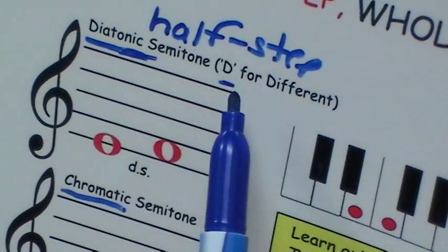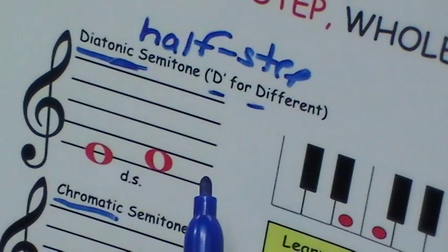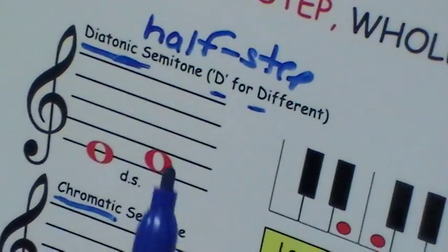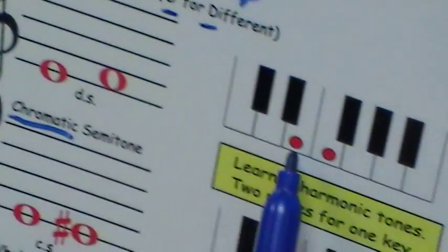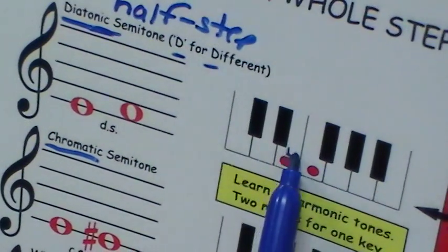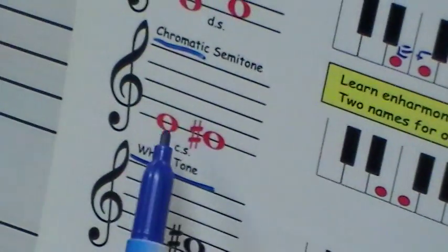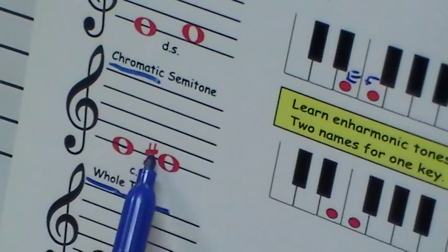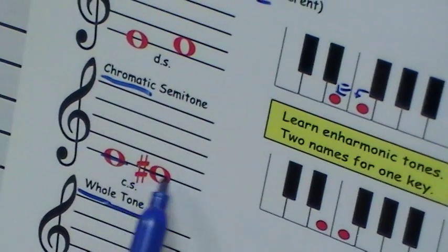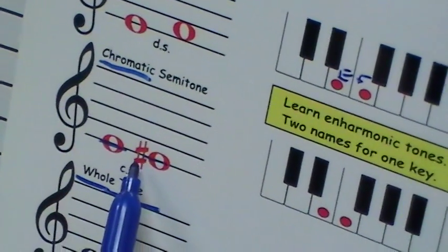So think of diatonic for the letter D for different, right? So diatonic, look where it looks like on the keyboard. E to F. But now, take a look down here. E to E sharp. You see how it's the same on the same line? Both notes are on the same line, except this one has the accidental of a sharp in front.